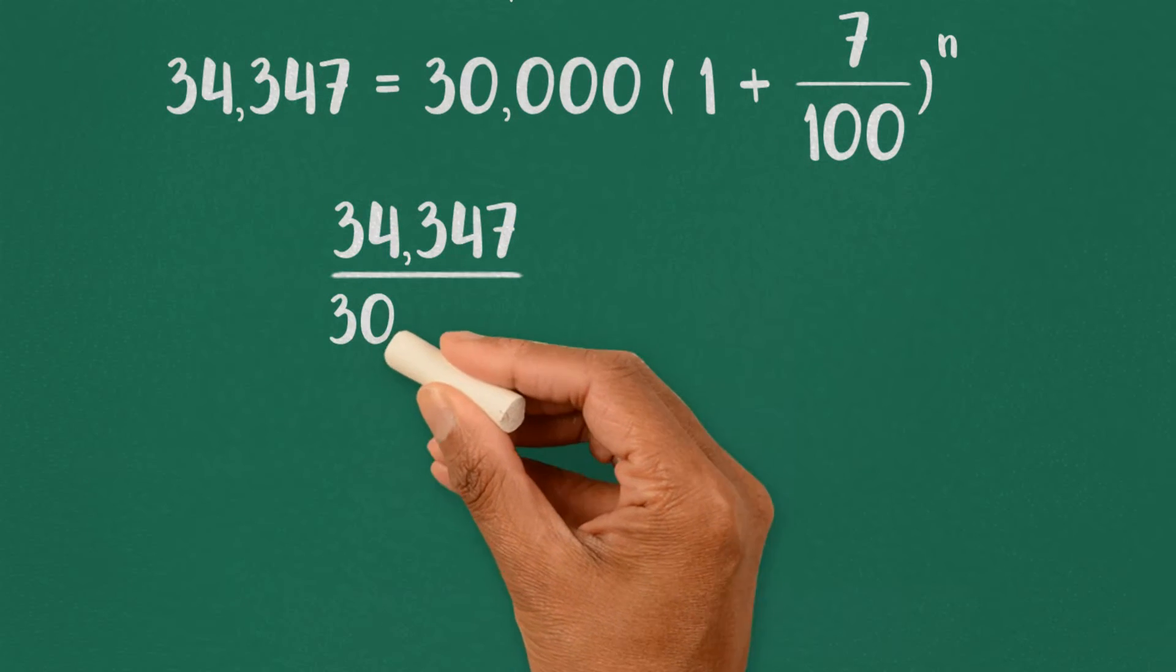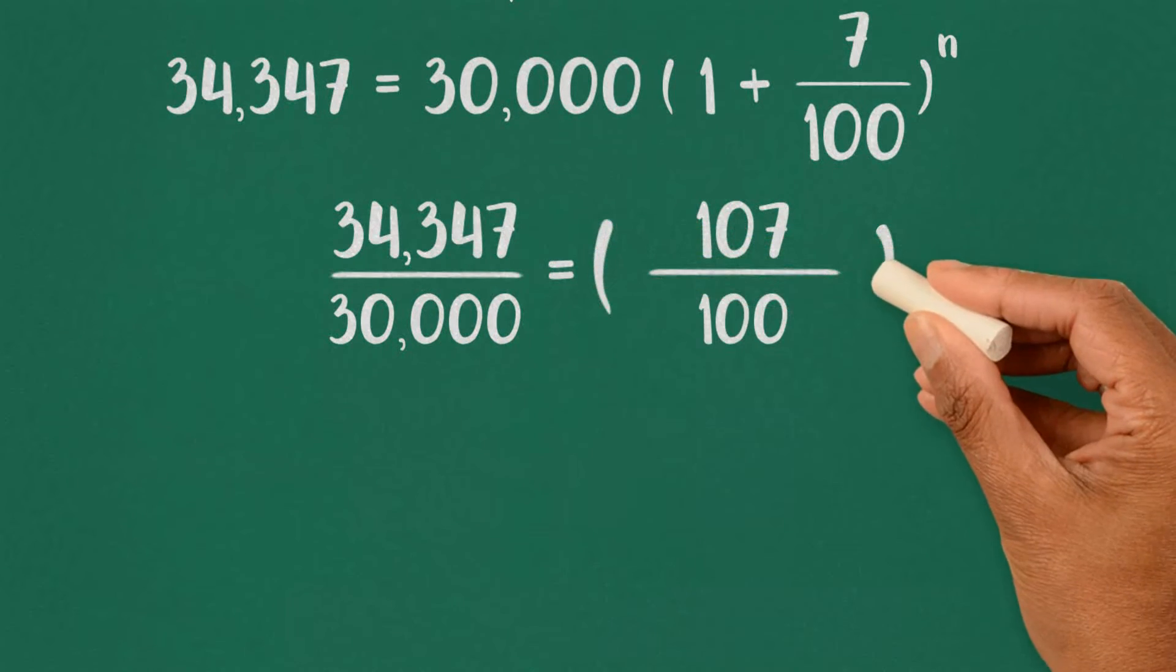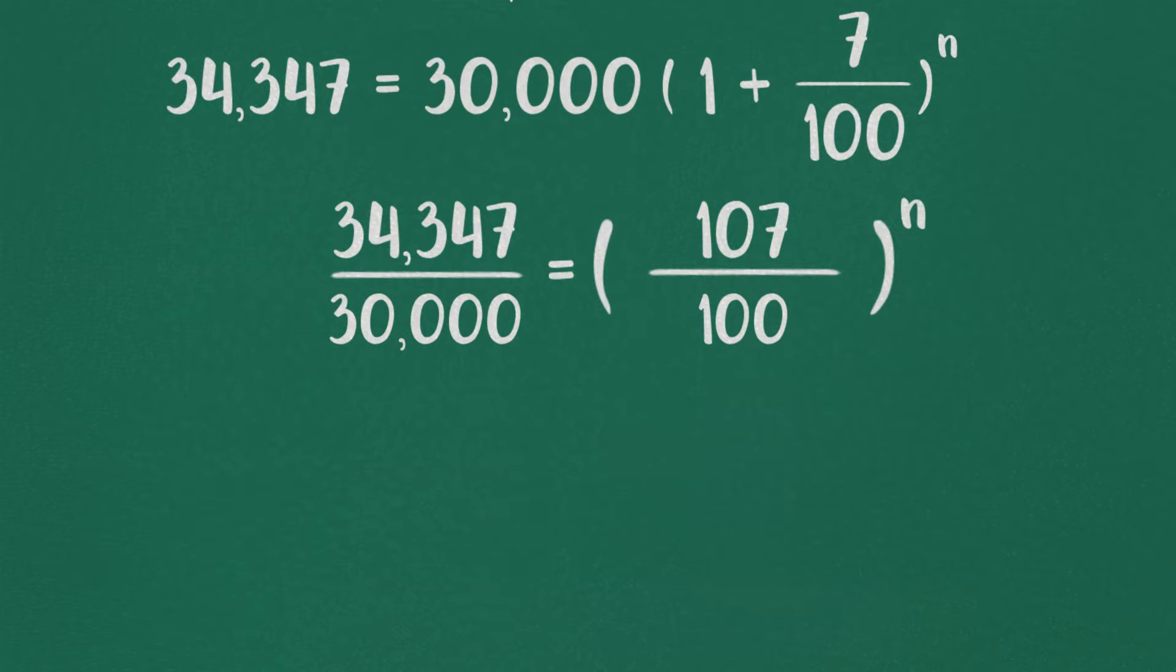Calculating further, 34,347 by 30,000 equals 107 by 100 raised to N.